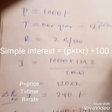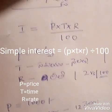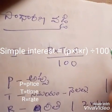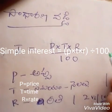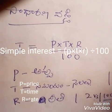This is the formula: I is equal to PTR by 100.